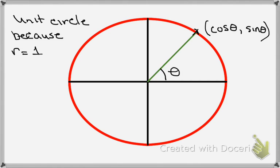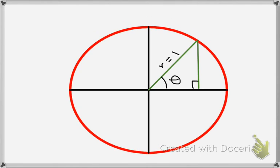That point on the circle will always have as its x-coordinate cosine theta and its y-coordinate sine theta. So for any ray, if we know the x and y coordinates of the point that it hits on the circle, and we have a unit circle, we also know the cosine and the sine of that angle made between that ray and the positive x-axis.